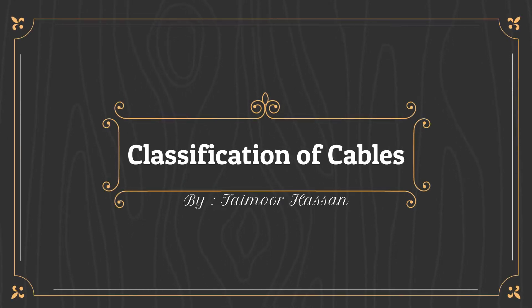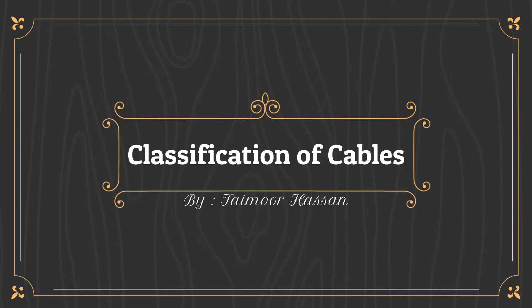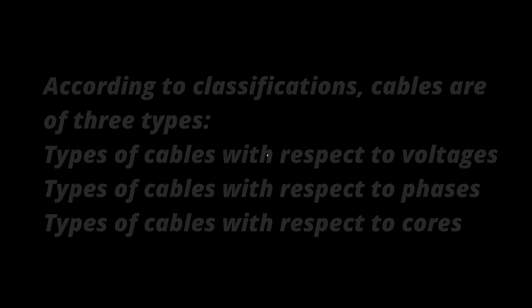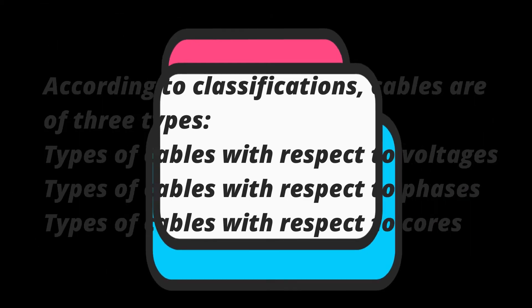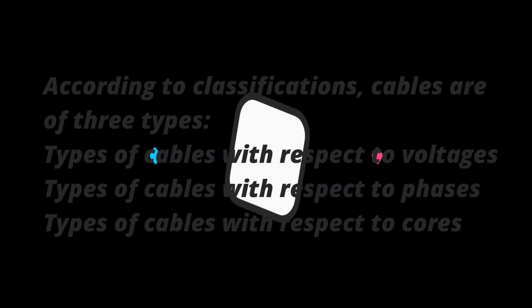Classification of Cables by Tamur Hassan. According to classifications, cables are of three types: types of cables with respect to voltages, types of cables with respect to phases, and types of cables with respect to cores.